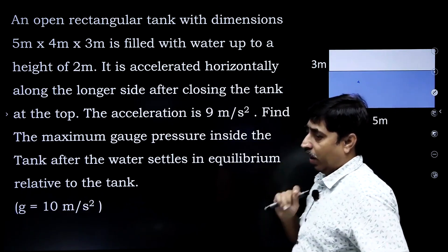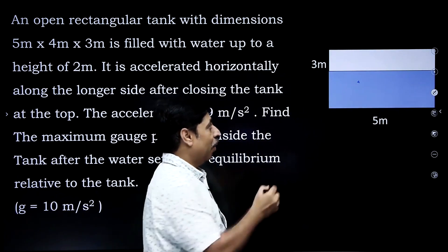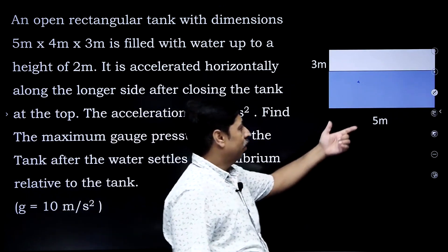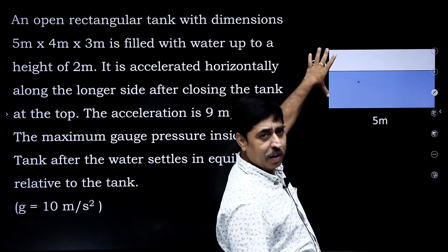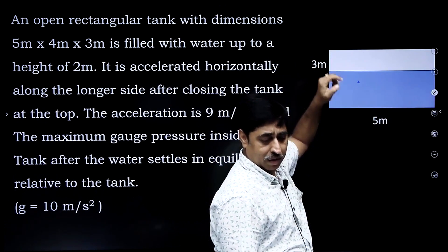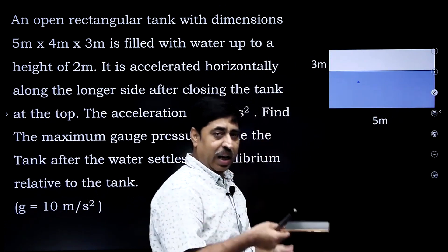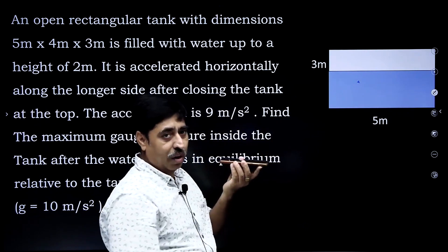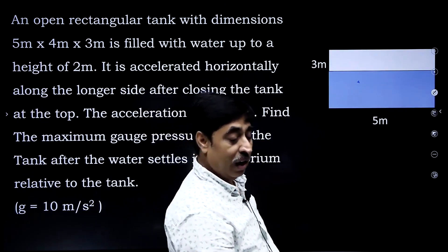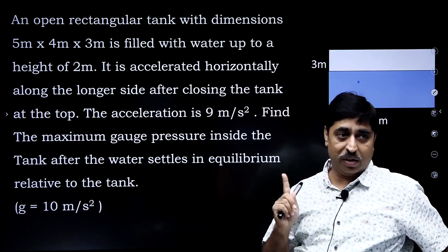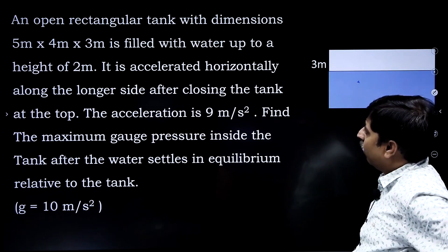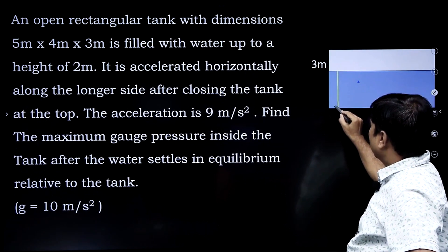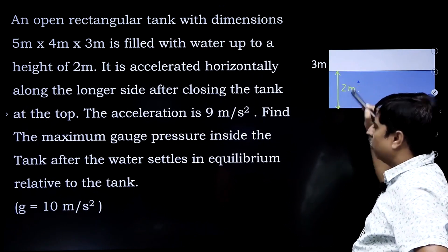There is an open rectangular tank. Its dimensions are 5 meters by 4 meters, and the height is 3 meters. The tank is open at the top. It is filled with water up to a height of 2 meters — the blue colored region is water and this height is 2 meters.